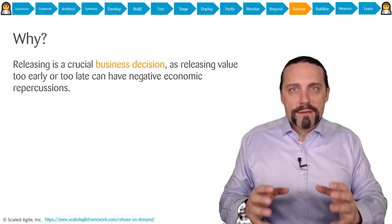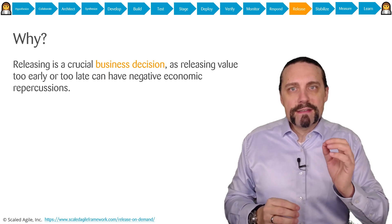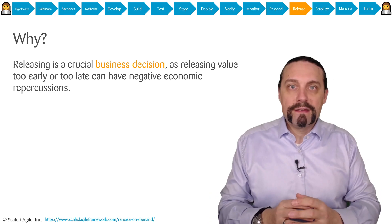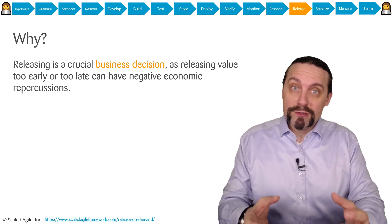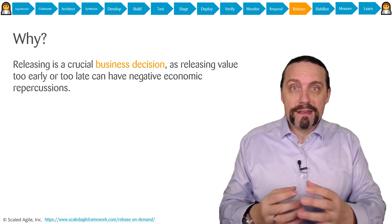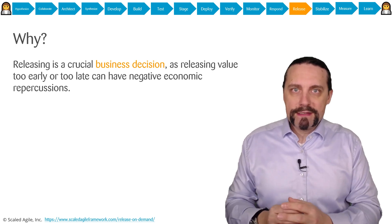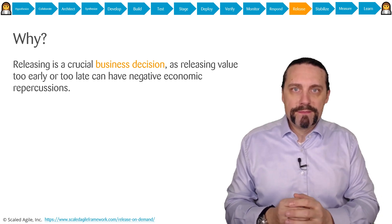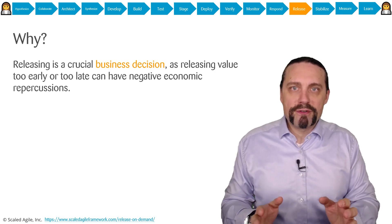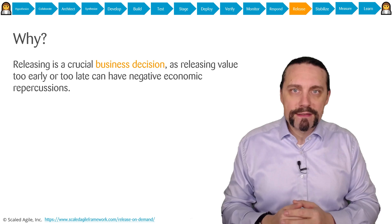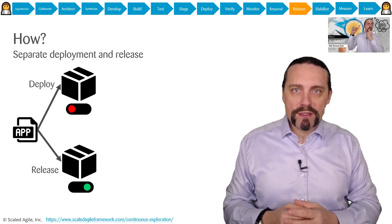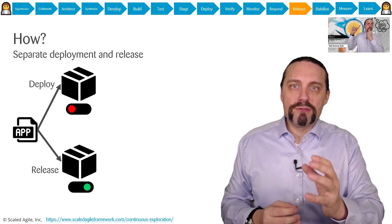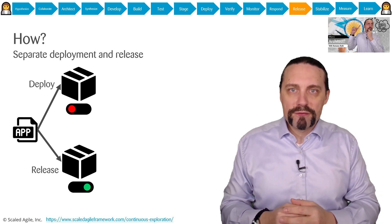We do this because releasing new functionality is a crucial business decision. Releasing too early can have a huge impact, and of course releasing too late can also have a negative impact. This is why releasing is a crucial business decision which needs to be made by the business — and this is exactly why we separate deployment from release, to give the business the ability to decide when the right time to release is.